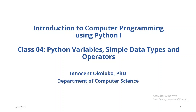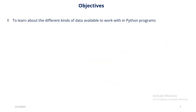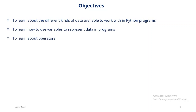My name is Innocent Okoloko. The objective of the class today is to learn about the different kinds of data available to work with in Python programs, to learn how to use variables to represent data in programs, and to learn about operators.